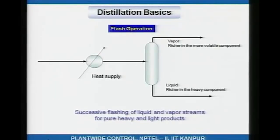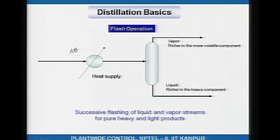Let us look at distillation basics. Say you have a feed stream that is a mixture of two components A and B, where A boils at a lower temperature than B — so A is more volatile than B. Both are volatile; the volatility of A is simply greater than that of B, meaning the boiling temperature of pure A is less than the boiling temperature of pure B. You heat it up, partially vaporize the stream, and then draw out the vapor and the liquid.